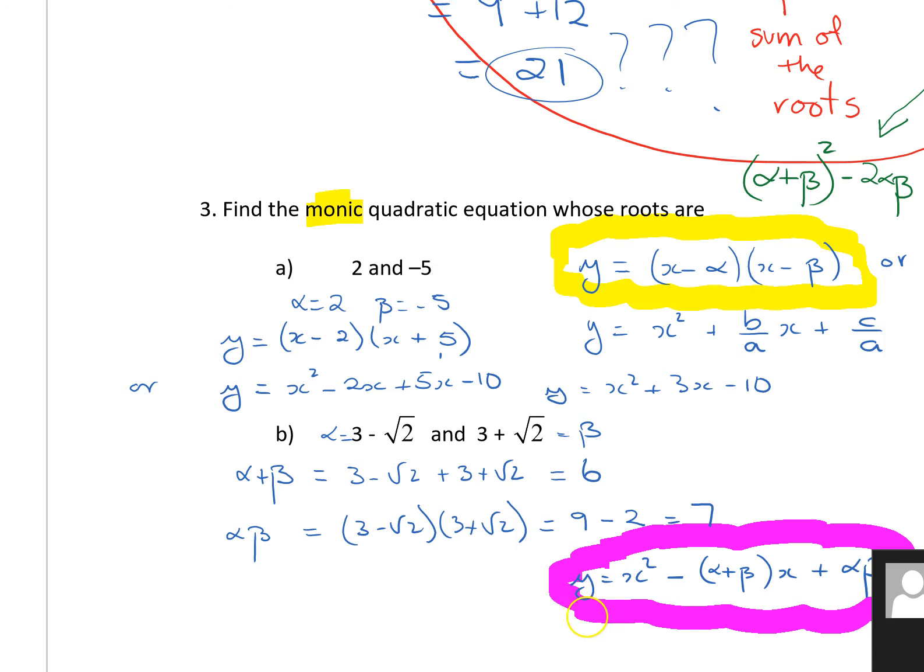That y could be written as x squared minus the sum of the roots in front of the x plus the product of the roots at the end. We can use those values we've just found in this case. And we can write.